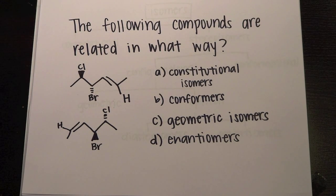So today we have an MCAT question of the day and it asks the following: compounds are related in what way? And they have constitutional isomers, conformers, geometric, and enantiomers.